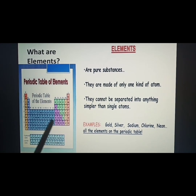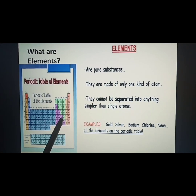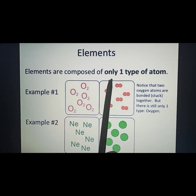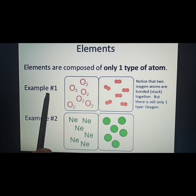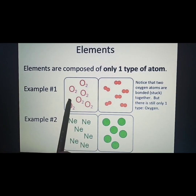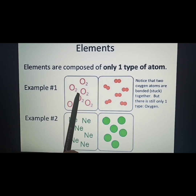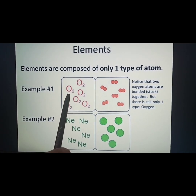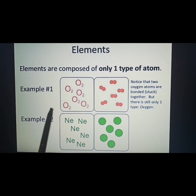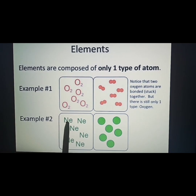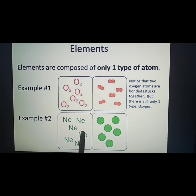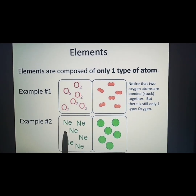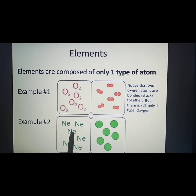Elements are represented by their symbols in the periodic table. For example, oxygen is made up of two oxygen atoms, but only one type of atom — oxygen — is present, so it is called an element. Another example is neon: Ne is the symbol for neon, and this element is made up of only neon atoms. Only one type of atom is present, so it is called an element.